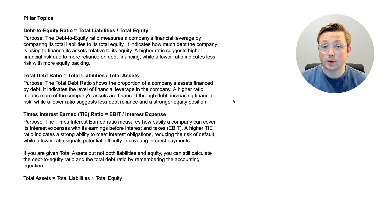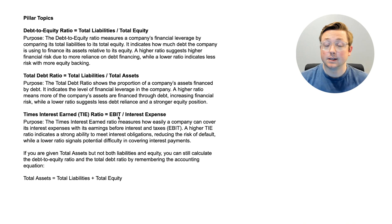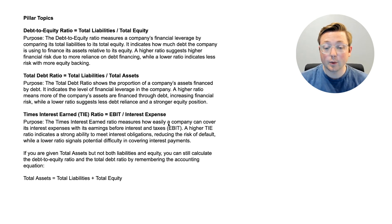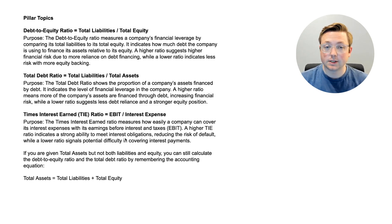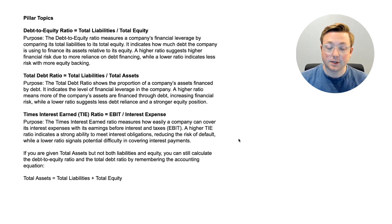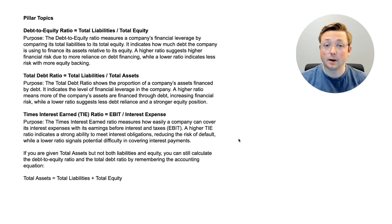The last ratio we talked about is the times interest earned, or TIE ratio: EBIT divided by interest expense. The times interest earned ratio measures how easily a company can cover its interest expenses with its earnings before interest and taxes. A higher TIE ratio indicates a stronger ability to meet interest obligations, reducing the risk of default, while a lower ratio signals potential difficulty in covering interest payments.